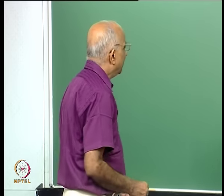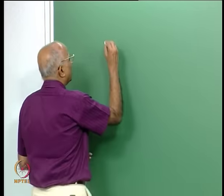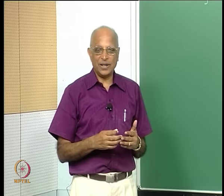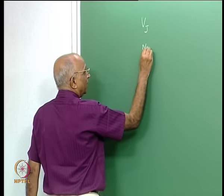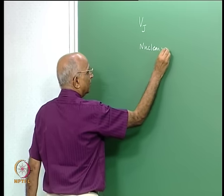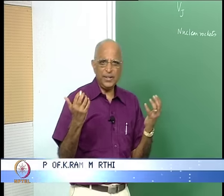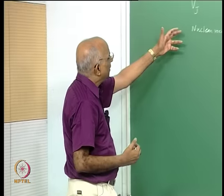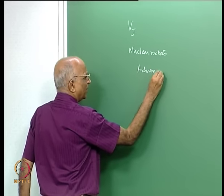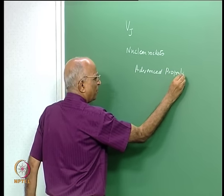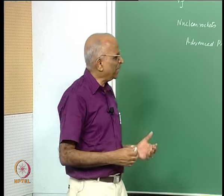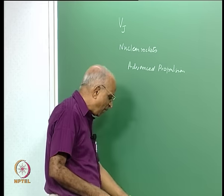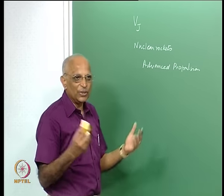Good morning. I think this will be the concluding lecture in this course. We said Vj must be high — let us see if there are some limitations to Vj. After looking at this we will try to see whether there are other possibilities like nuclear forces for generating thrust, nuclear rockets. Whether we can use light intensity — photons — or deep space energy for developing thrust. These are some of the newer areas of advanced propulsion.